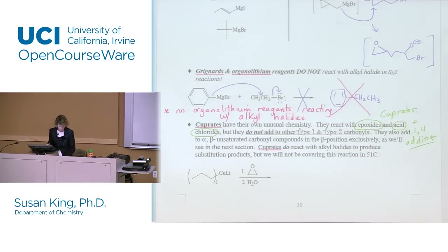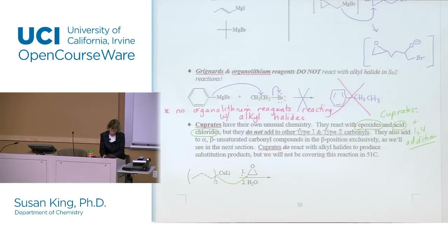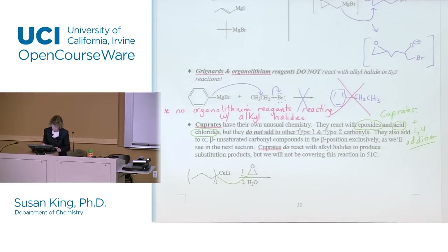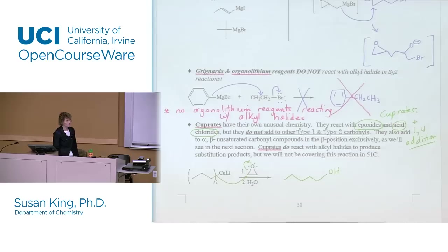Cuprates react with epoxides, acid chlorides, and 1,4-addition. Let's give an example of an epoxide reaction. The cuprate opens up the epoxide, and after protonation gives you an alcohol. So cuprates will do that. Epoxides, acid chlorides, and 1,4-addition — those are the only reactions we're going to do with cuprates.